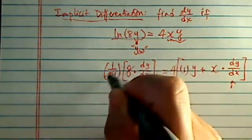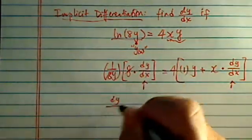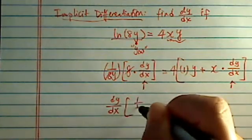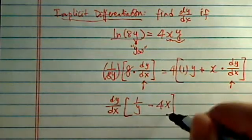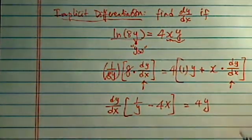So let's say we can gather all of them together. I have dy dx, and here I have 1 over y on this side, and minus, let's say I have a 4x on that side, is equal to 4y.